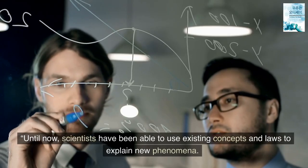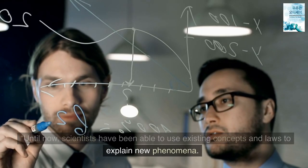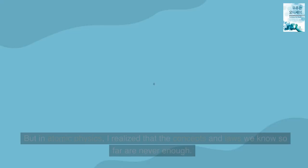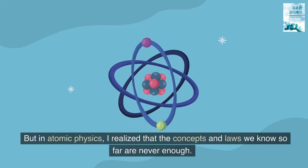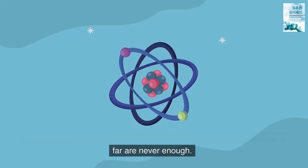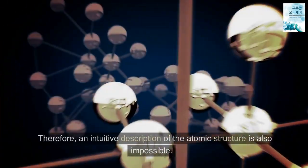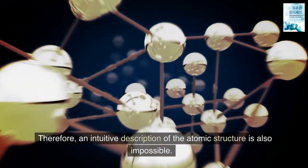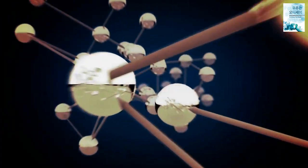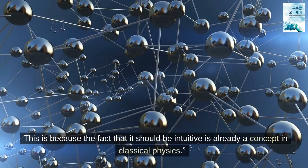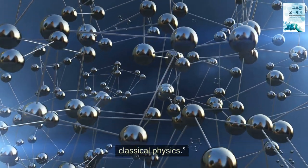Bohr continued talking. Until now, scientists have been able to use existing concepts and laws to explain new phenomena. But in atomic physics, I realize that the concepts and laws we know so far are never enough. Classical physics cannot be applied inside atoms. Therefore, an intuitive description of the atomic structure is also impossible. This is because the fact that it should be intuitive is already a concept in classical physics.